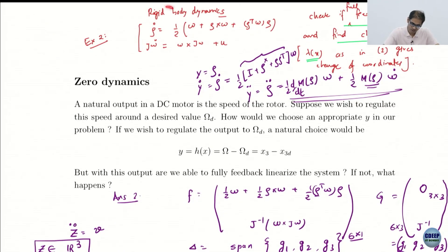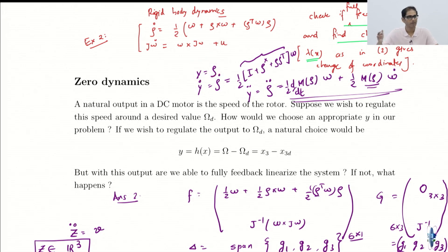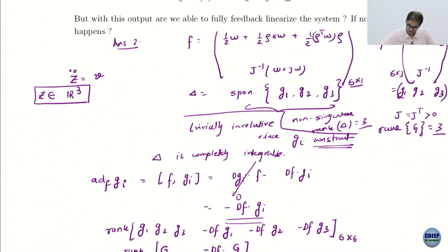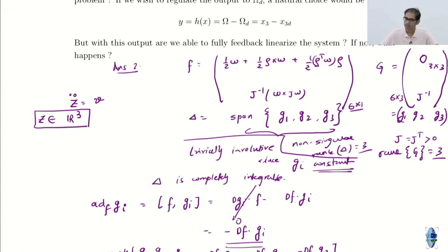There is a small spacecraft rigid body example that I've also done here, but I'm not going to cover it — I want you to look at it on your own. It turns out you can take y equal to ρ itself, the kinematics parameters — this could be the modified Rodriguez parameters or quaternion. With this output, under certain conditions, you can get a feedback linearized system.